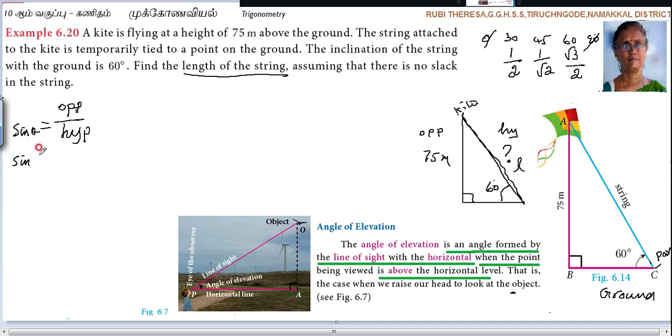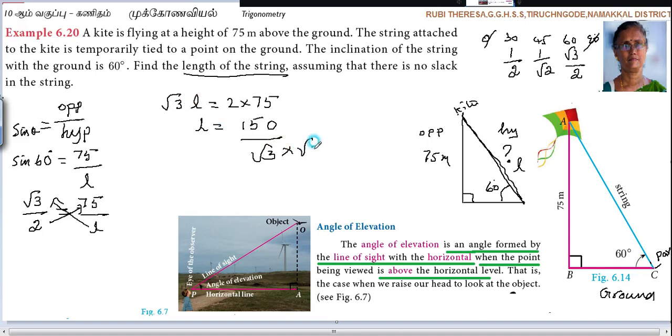So here we want 60. What is the measurement they have given? Sine 60 degrees. What is opposite side? 75. Hypotenuse is the length of the string, L. Sine 60 is nothing but root 3 by 2 equal to 75 divided by L. Just you do the cross multiplication. Root 3 L equal to 2 into 75. So both denominator and numerator are multiplied by root 3.